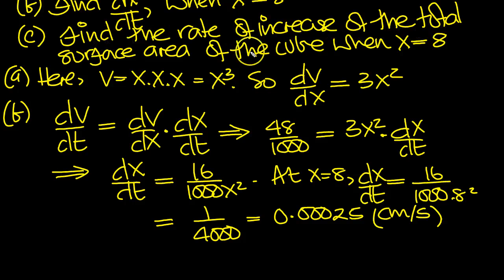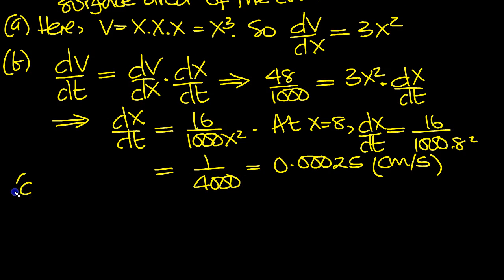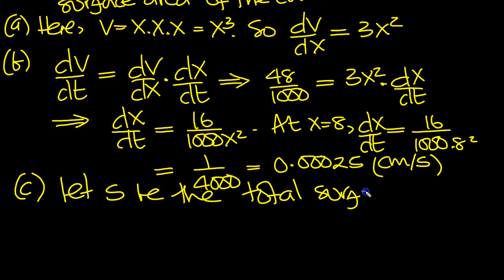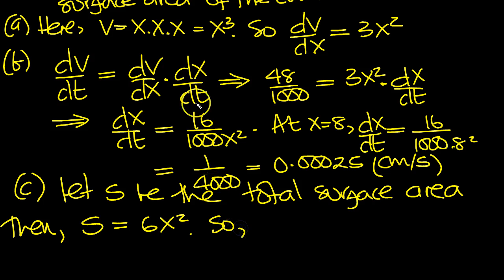Find the rate of increase of the total surface area of the cube when x equals 8. Let s be the total surface area. We've got 6 sides of a cube. Each side is x times x in area. So s is equal to 6 lots of the area of each side, 6x squared.